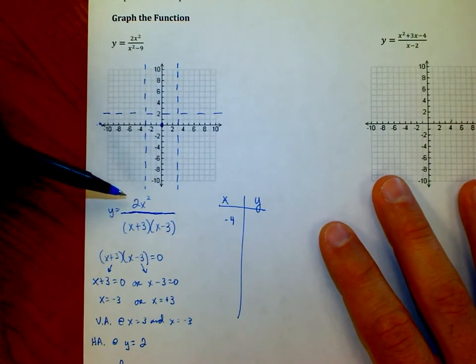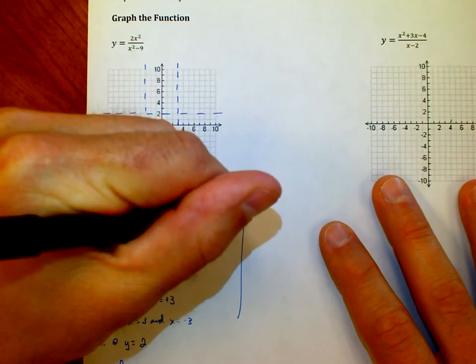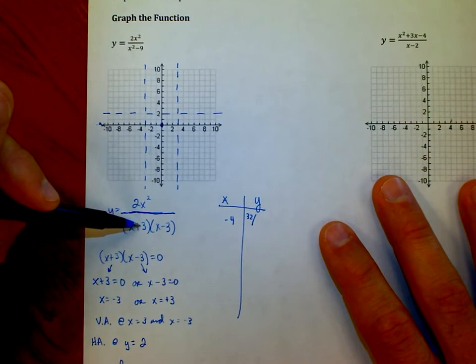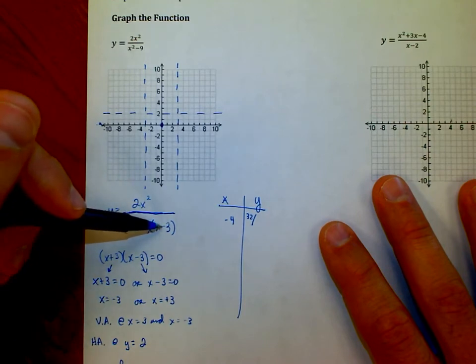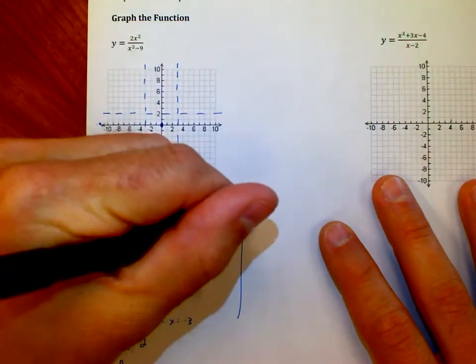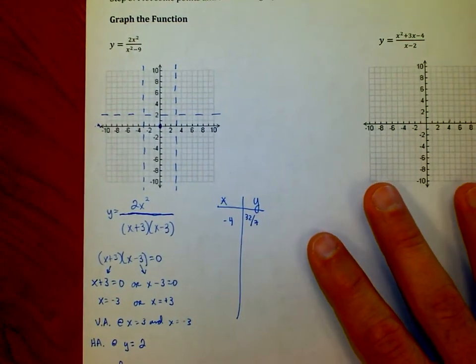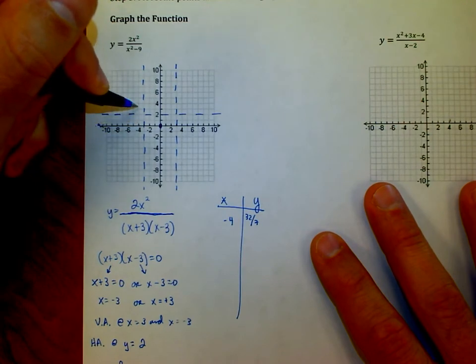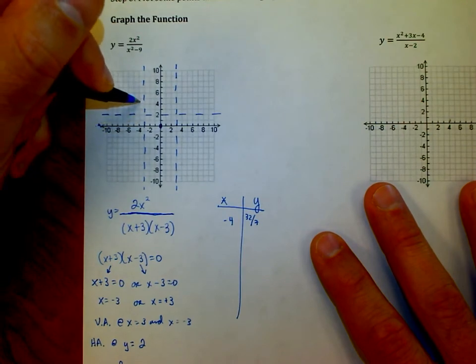Negative 4 plus 3 is negative 1. Negative 4 minus 3 is negative 7. So I have negative 1 times negative 7 which is positive 7. I have 32 divided by 7 which is like 4 point something. So I'm going to come over to negative 4, up to 4 point something, put a dot.